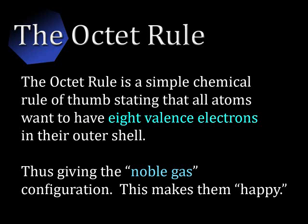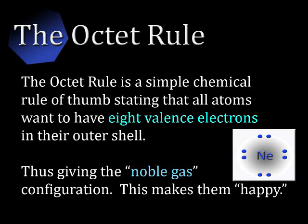We just looked at how the periodic table is structured. Now we will examine the importance of the valence electrons and what role they play in chemical bonding. First, we need to become familiar with the octet rule. The octet rule is a simple chemical rule of thumb stating that all atoms want to have eight valence electrons in their outer shell, thus giving them the noble gas configuration and making the atom happy.